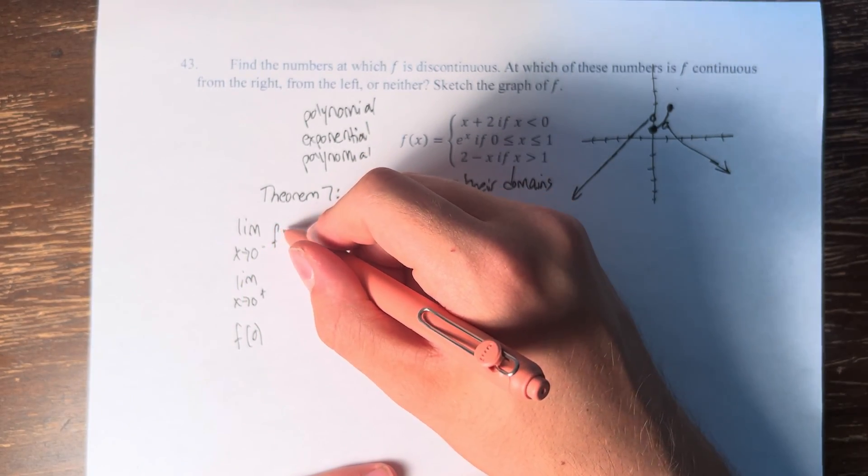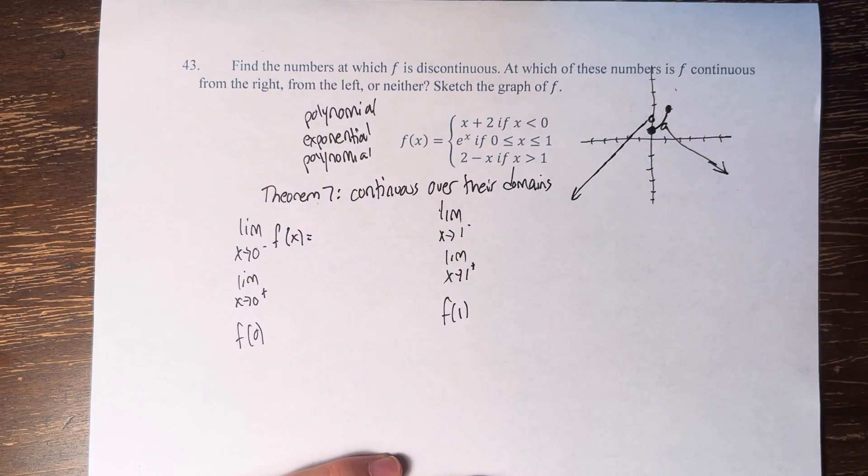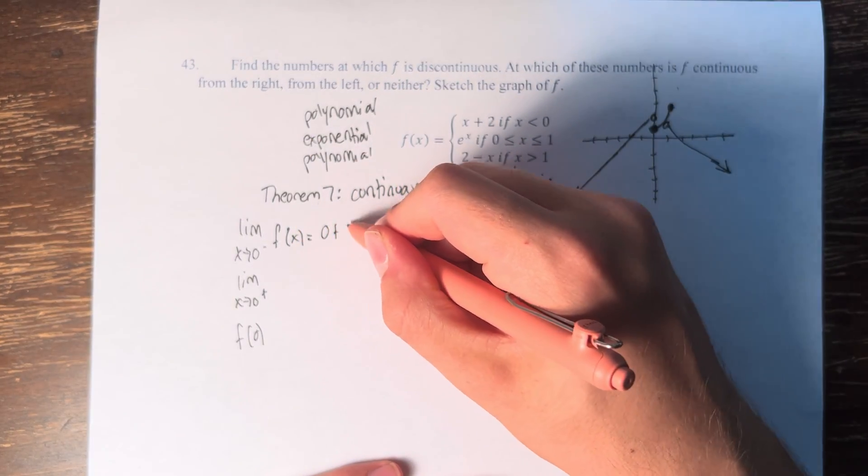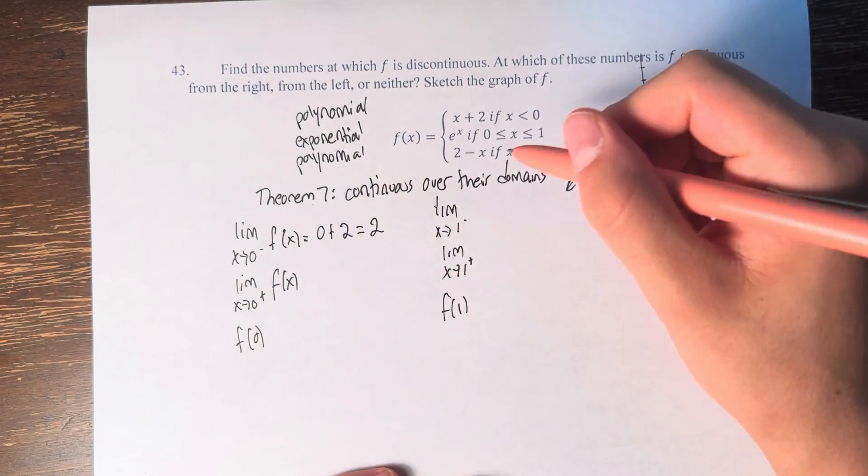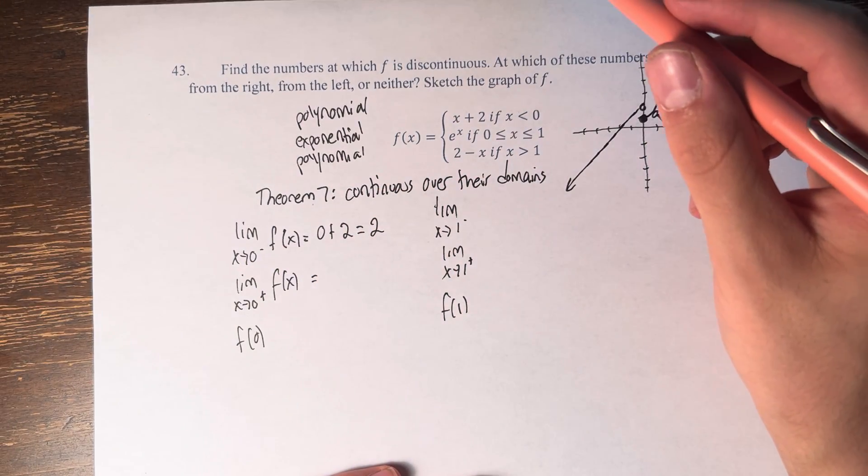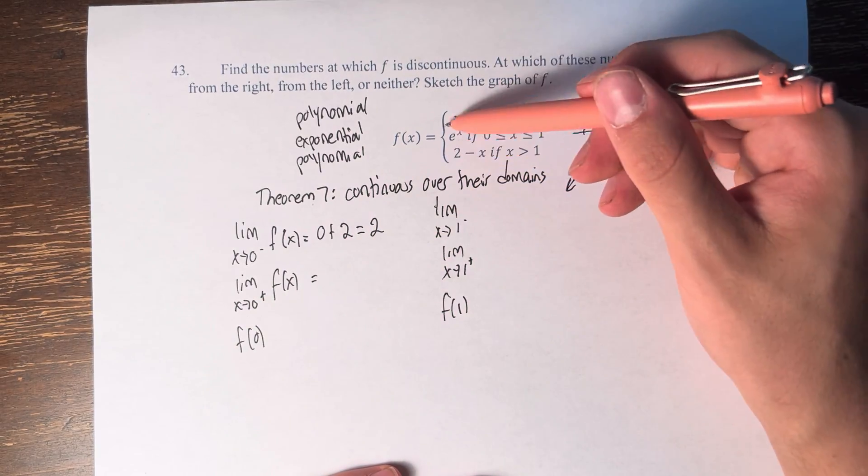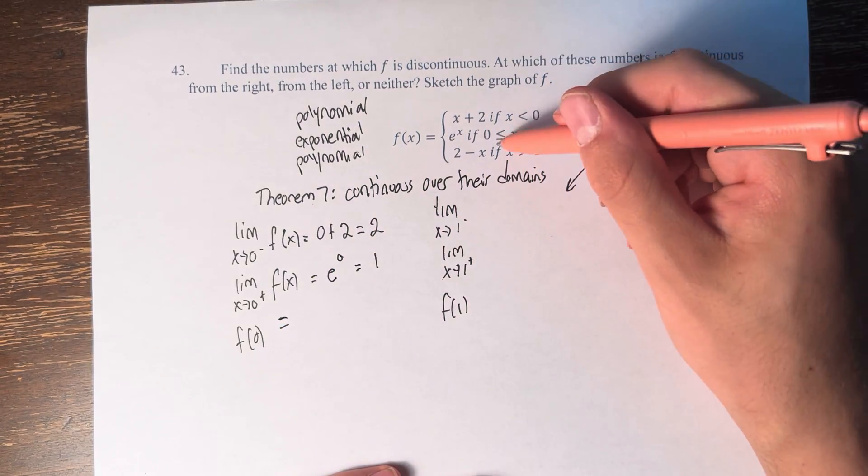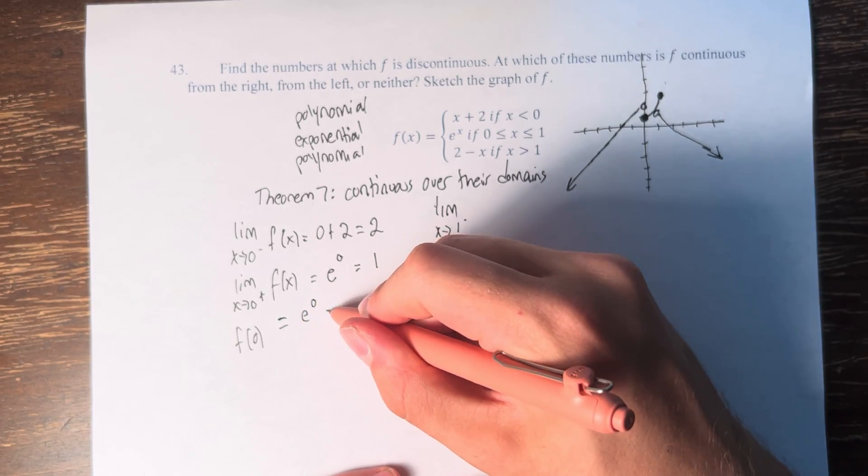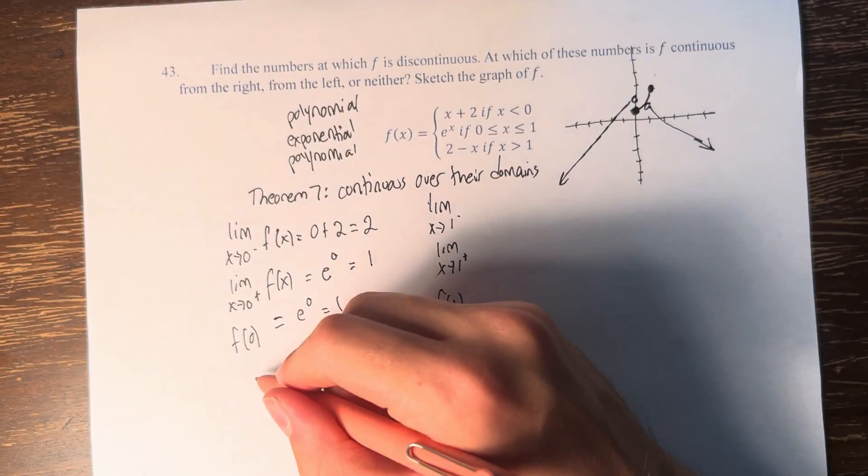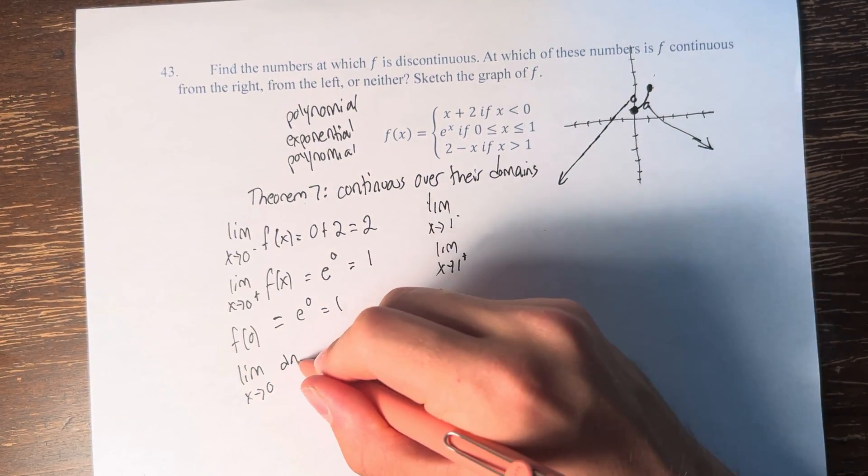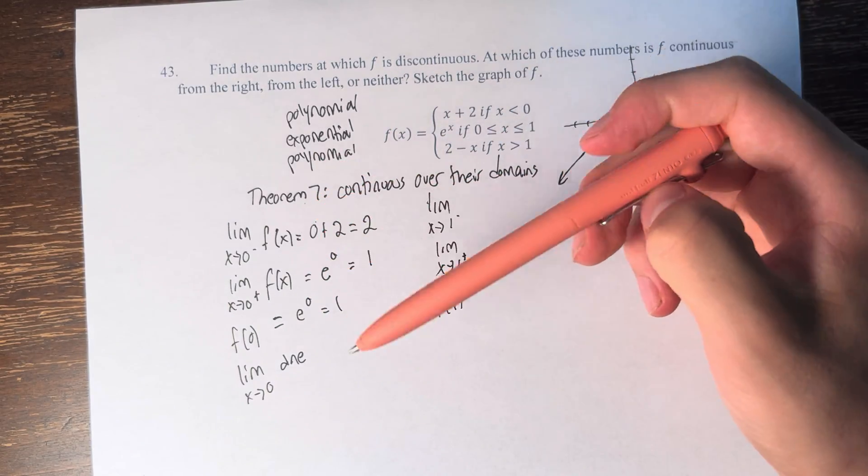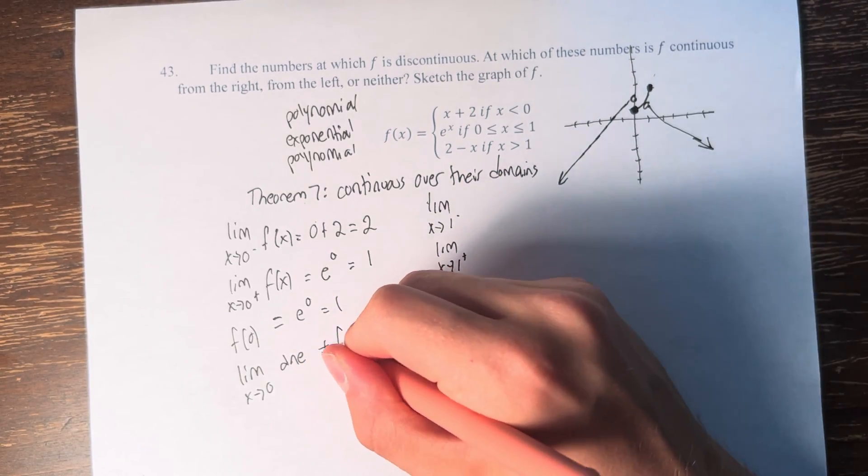So the limit as x approaches 0 from the left of this function. From the left means we're doing values smaller than 0, so we're going to use x plus 2. For none of these do we have a domain restriction, so we can just plug in 0 directly. So this is going to be 0 plus 2 is equal to 2. The limit as x approaches 0 from the right, this is going to be plugging in values that are greater than 0. So we're going to use e to the x. So e to the 0, which is 1. And f of 0 is the value of the function at 0. So at x equals 0, we use e to the x, so that's just e to the 0 again, which is 1. And therefore we can say that the limit as x approaches 0 does not exist, because the limit as x approaches 0 from the left and the right do not equal each other. And therefore we can say that it can't be continuous, because if it doesn't exist, it can't equal f of 0.